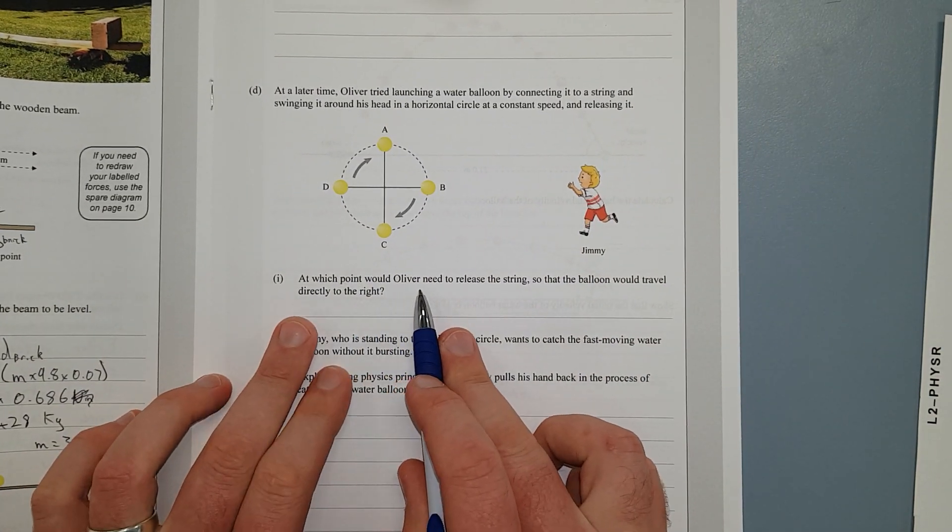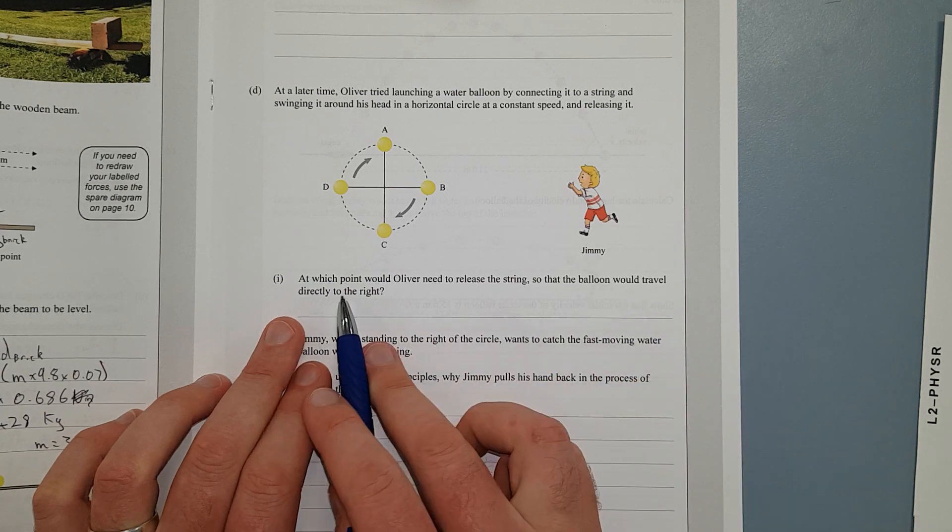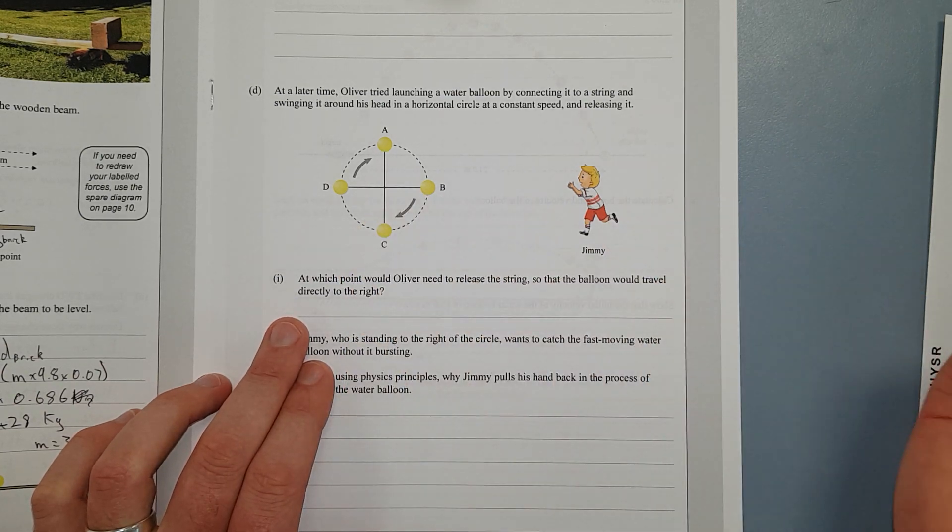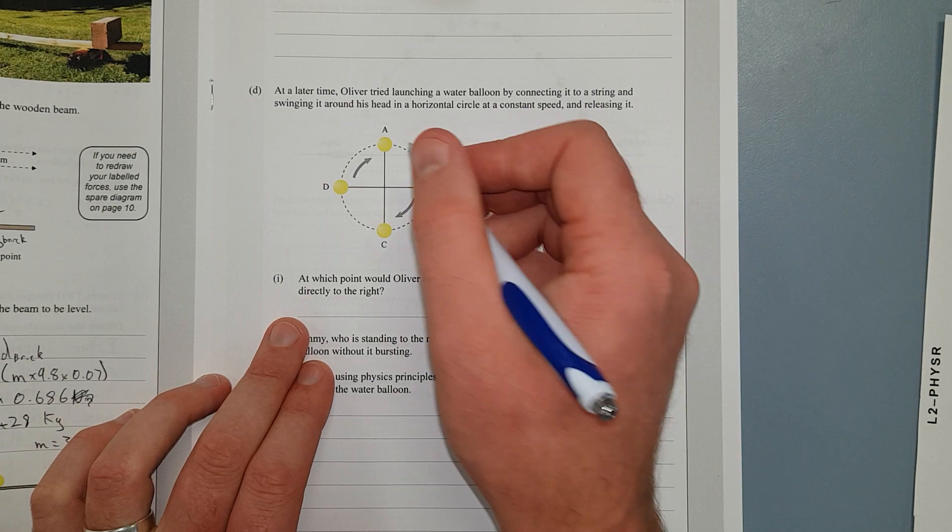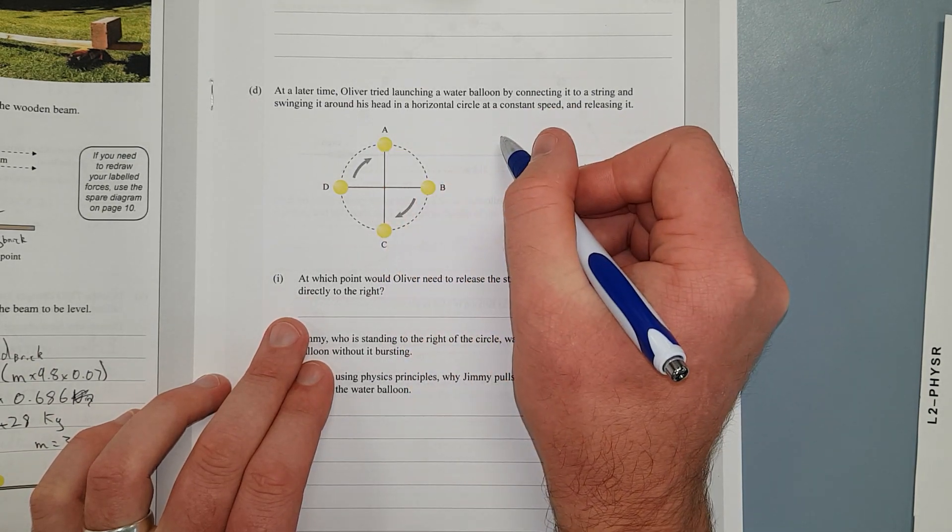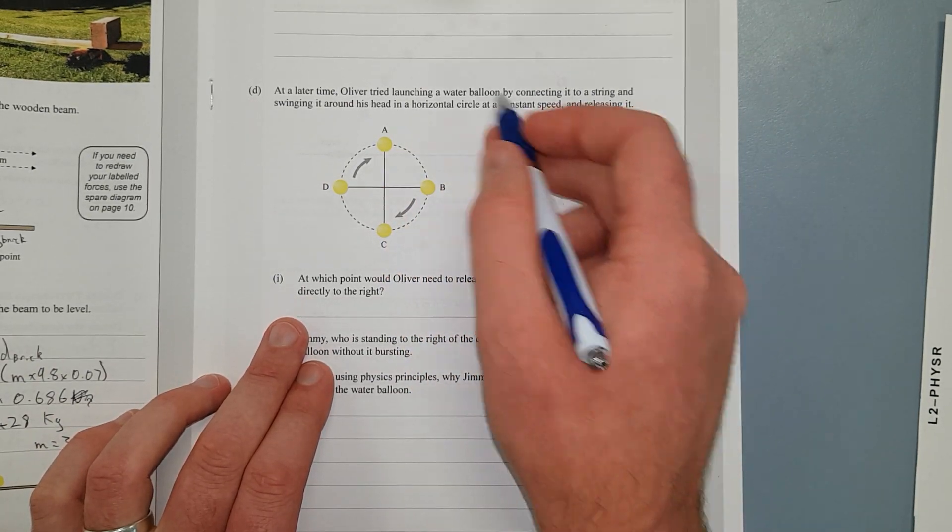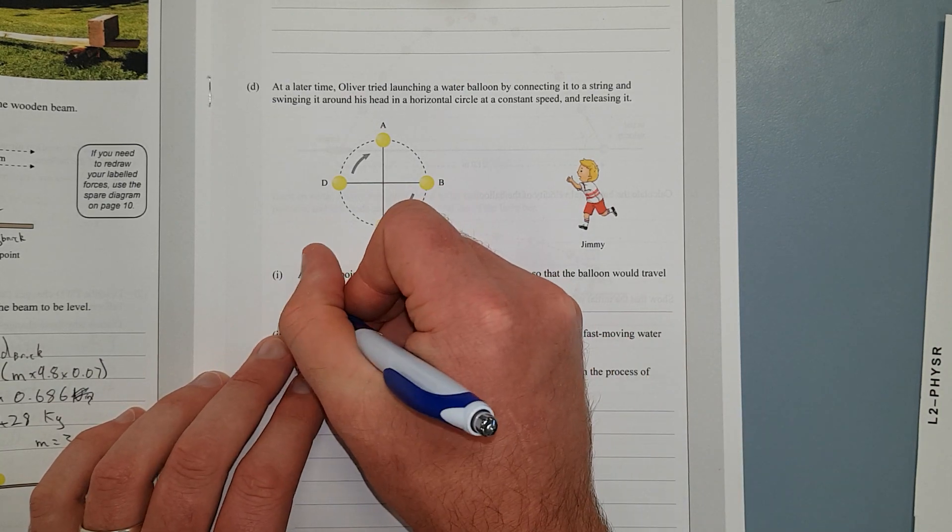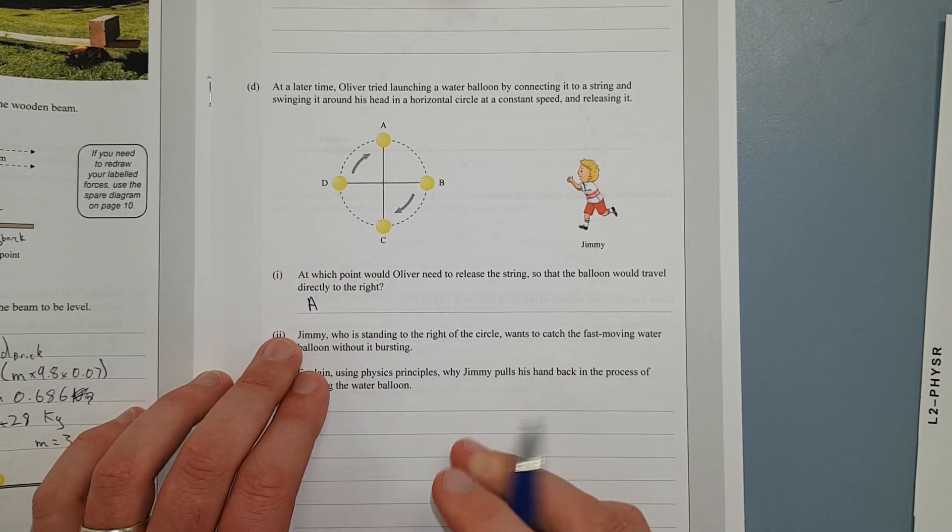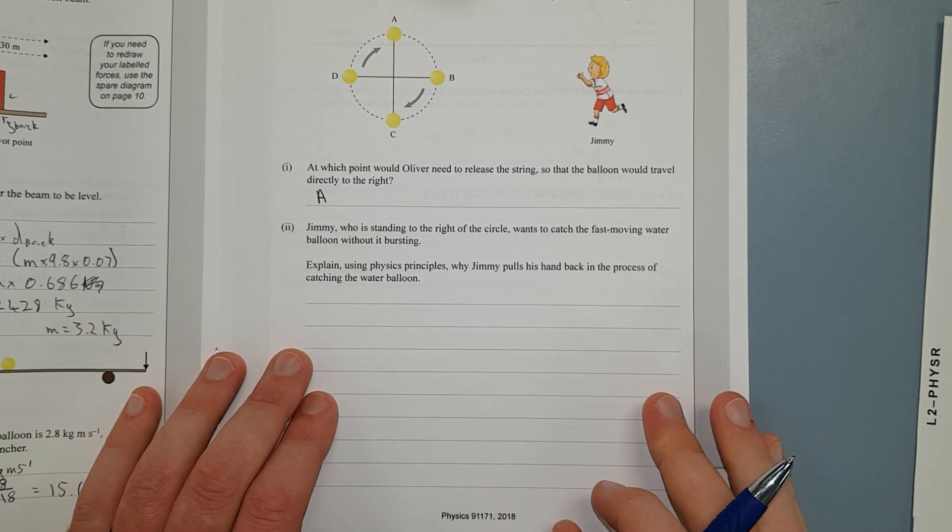At which point would Oliver need to release the strings so the balloon would travel directly to the right? Right meaning that way, it's whirling around like that, the arrows are pretty obvious, he needs to release it at A. I'm not going to draw on that because then the examiner would need to circle that, and that is annoying, so just write A. It's so much easier for people marking it.